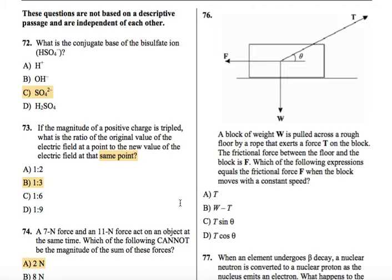If the acceleration of an object is zero, then we know that the net force on an object is zero, according to Newton's second law. F equals MA. If A is equal to zero, then F net is equal to zero.